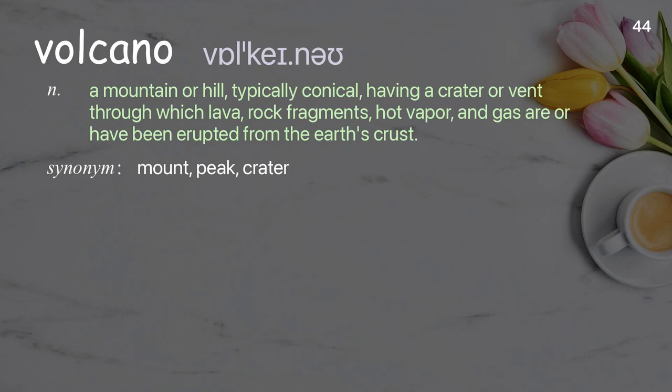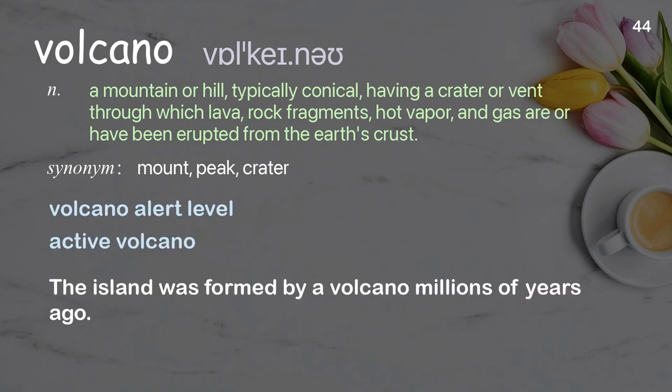Volcano. A mountain or hill, typically conical, having a crater or vent through which lava, rock fragments, hot vapor, and gas are or have been erupted from the earth's crust. Examples: volcano alert level, active volcano. The island was formed by a volcano millions of years ago.